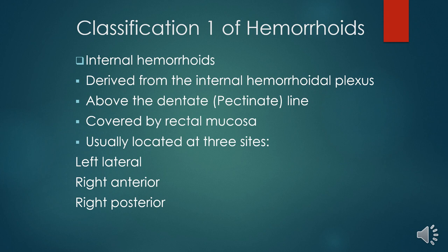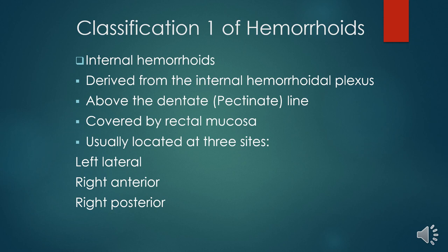How do we classify hemorrhoids? Hemorrhoids can be classified in two ways. The first classification is by relationship to the dentate line, giving internal hemorrhoids and external hemorrhoids. Internal hemorrhoids are derived from the internal hemorrhoidal plexus, which is above the dentate line, covered in rectal mucosa, and usually located on three sides: the left lateral, the right anterior, and the right posterior.